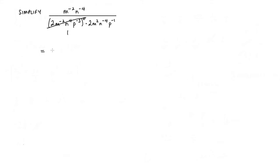So now what we have is m to the minus 2, n to the minus 4. And that is all over 2m squared, n to the minus 4, and p to the minus 1.